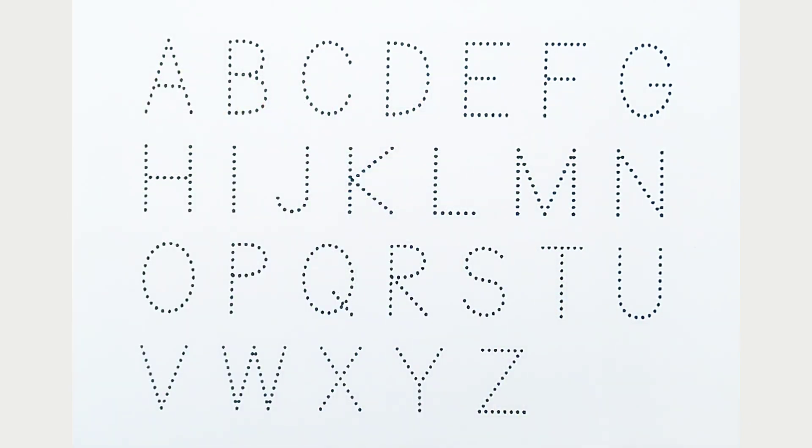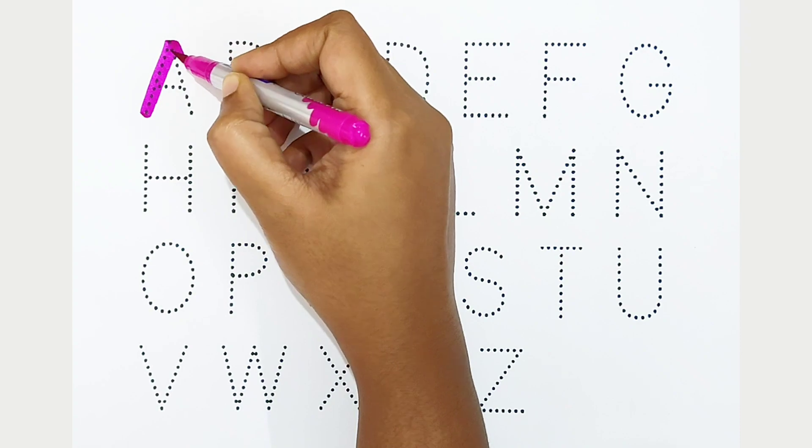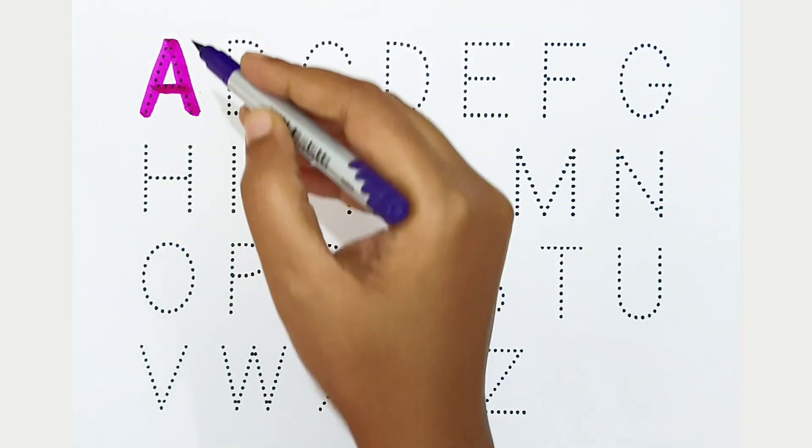we can learn the alphabets from A to Z. Let's begin! A, dark pink color, A is for apple. B...